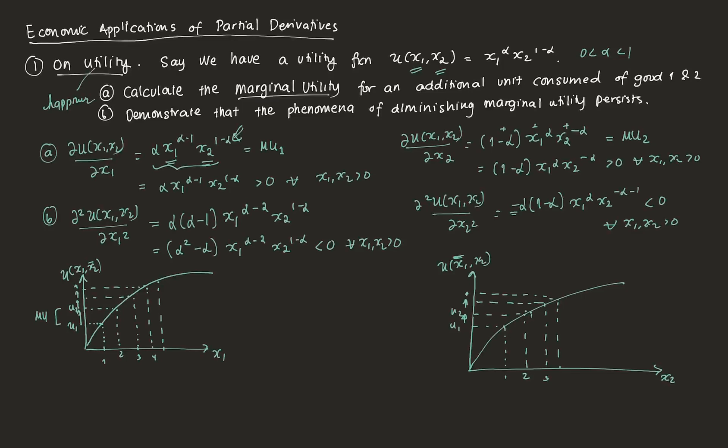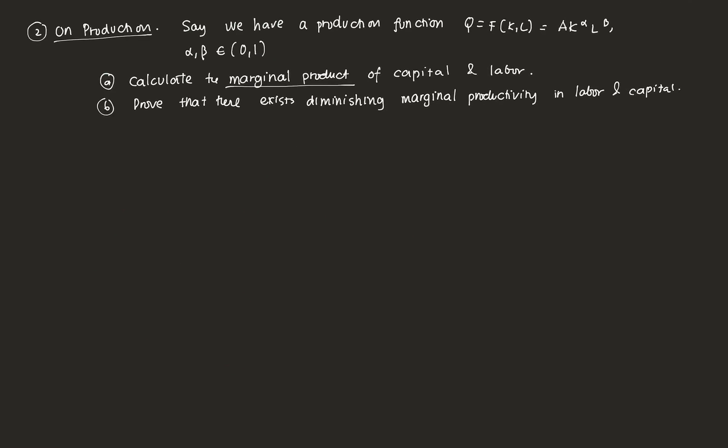We can also apply partial derivatives to the concept of production. Say we have a production function Q = A times k raised to alpha times l raised to beta, where alpha and beta lie between 0 and 1. We can calculate the marginal products of labor and capital, which measure the rate of change of production with respect to the amount of capital or labor used, holding the other input fixed.